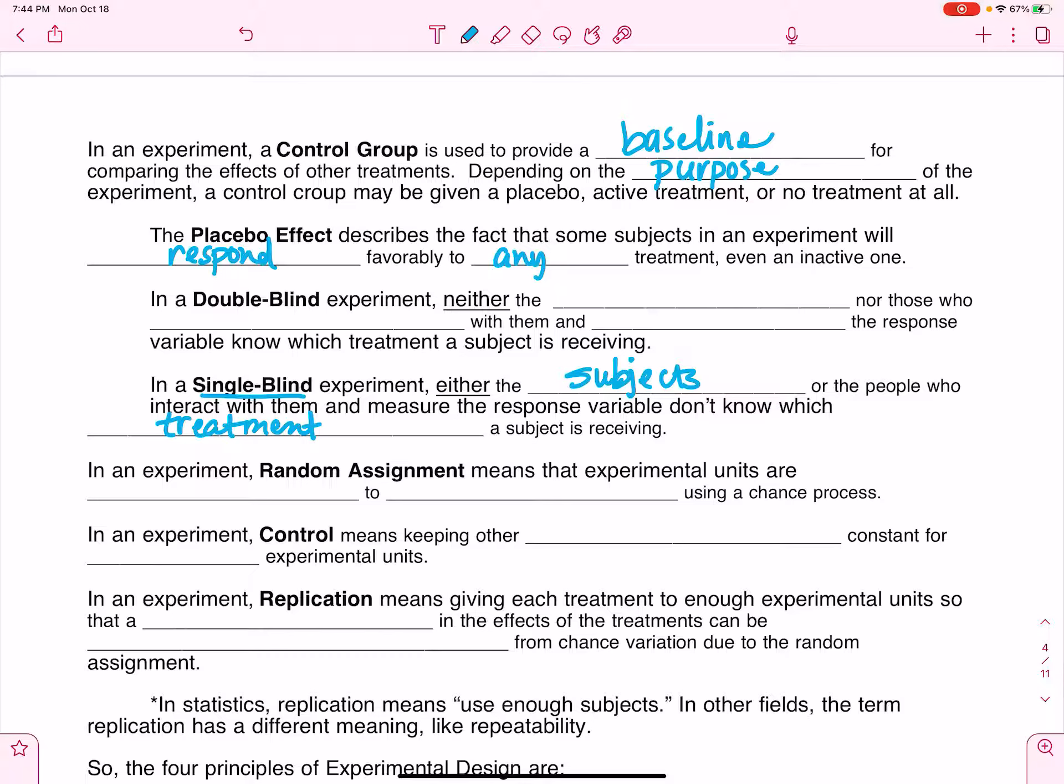Double blind means that a third party knows who's getting what, but the actual subjects in the experiment don't know and the people interacting with them to take their measurements or distribute any kind of treatments, they also don't know. A double blind experiment means that neither the subjects nor those who are interacting with them and measure their responses know. That's both groups of people don't know.